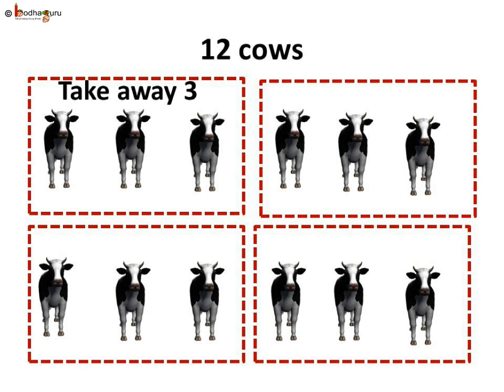Look at what we did. We took away three cows, then again three cows, then again three, then again three cows. So, four times we took away three from twelve. That is, we subtracted three from twelve four times. We repeated the subtraction of three from twelve.